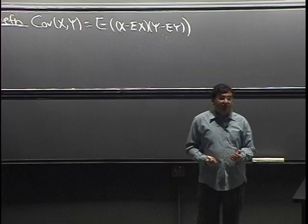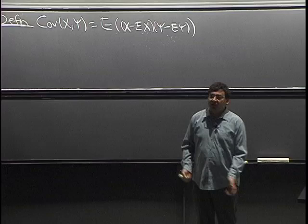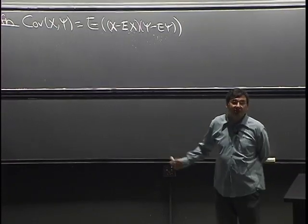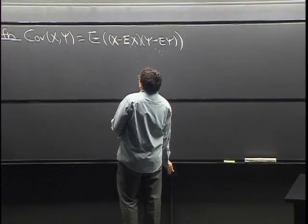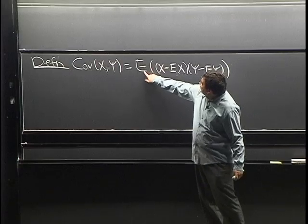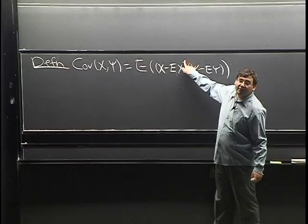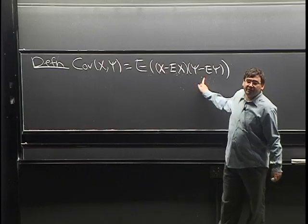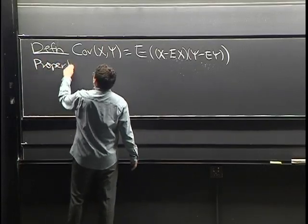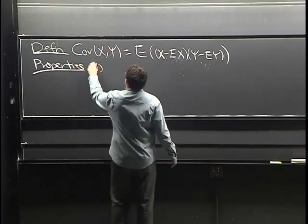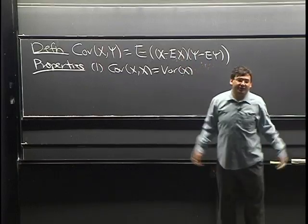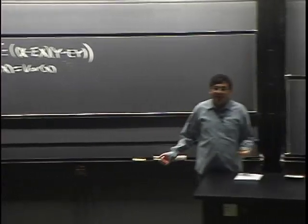We'll actually define correlation in a little while. Correlation is a very familiar term — people talk about it all the time — but mathematically it's defined in terms of covariance, so we'll get to that soon. Just like for variance we had two different ways to write it: we defined variance as E[(X − E[X])²]. If we let X equal Y in the covariance definition, that is just the variance. So covariance of X with itself is the variance — that's property one.